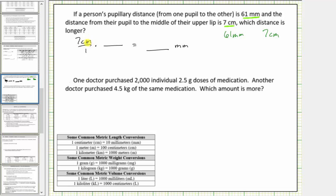Because we want centimeters to simplify out of this product, the units of centimeters must be in the denominator of the unit fraction, leaving millimeters for the numerator. Using the conversion one centimeter equals ten millimeters, the unit fraction is ten millimeters divided by one centimeter. This fraction is equal to one, so we are not changing the value — we are changing the units by multiplying by this fraction.